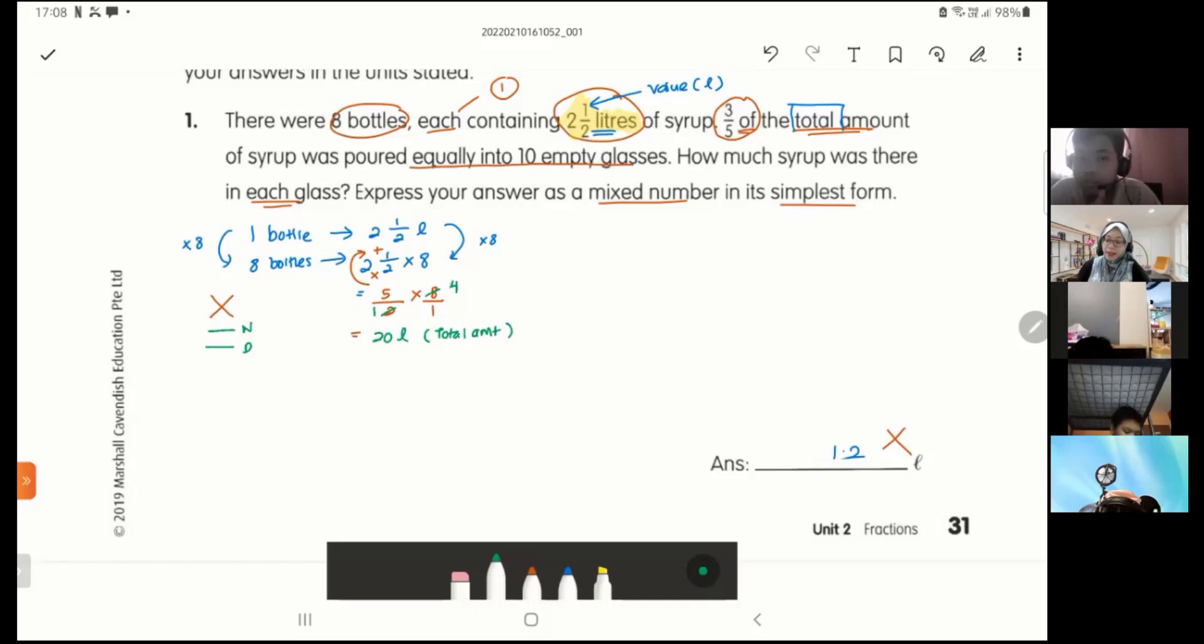Total amount of syrup inside. And then, what happened to this total amount of syrup? They were poured equally into ten empty glasses. So I want to know how much are there in each glass. When I see the word equally, when I see the word each, what comes into my mind? Divided. We don't go there yet. Not everything was poured. Three over five of the total amount. So not everything was poured to the glasses, only three-fifths.